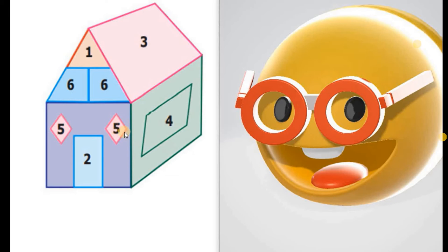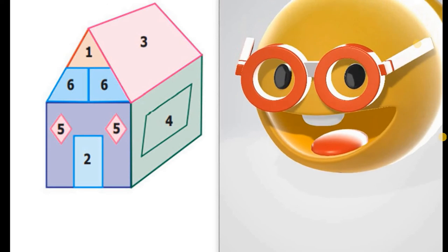Now see what is number 5 here. Can you tell me about this number 5? So what is it? It looks like a square, but it is not a square. Because in a square you can see right angles at all 4 corners. But here 4 sides are equal, however the angles are not 90 degrees. So this shape is called a rhombus.